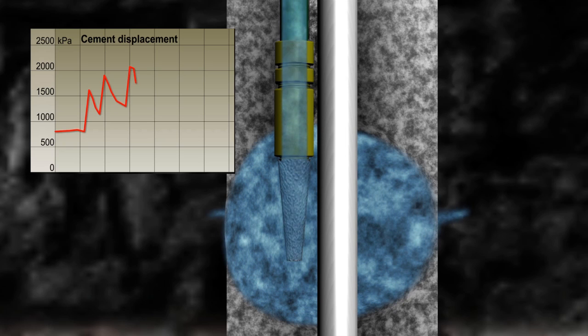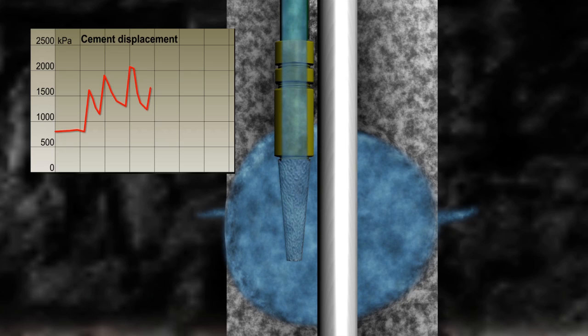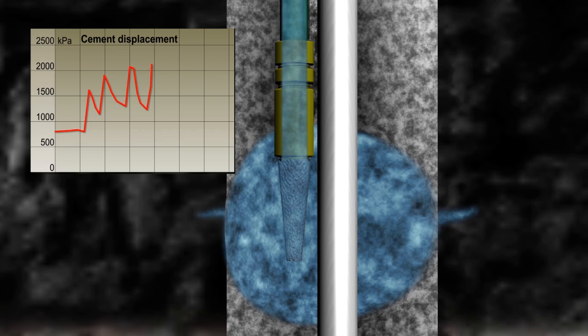The cement grout is then allowed to set. The installation is then tested again by pumping water through the cement displacement tubing. The transducers are monitored throughout this process. A decay of pressure after the final injection indicates that there is a connection with the formation to be monitored.